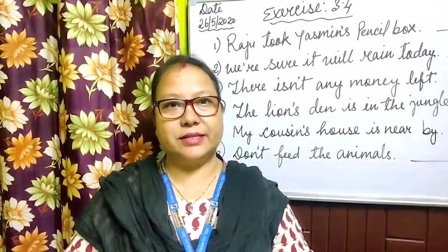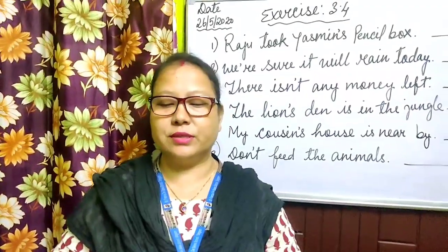So next, children, take out exercise 3.4 — sorry, not 3.3, it's 3.4. We will do this on the blackboard. So children, take out exercise 3.4: Identify whether the given sentences have used the apostrophe for possessives or contractions.